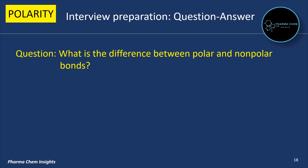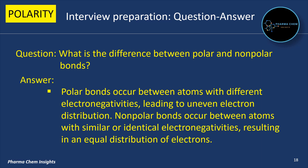Next question: what is the difference between polar and non-polar bonds? Answer: polar bonds occur between atoms with different electronegativities, leading to uneven electron distribution, while non-polar bonds occur between atoms with similar or identical electronegativities, resulting in an equal distribution of electrons.